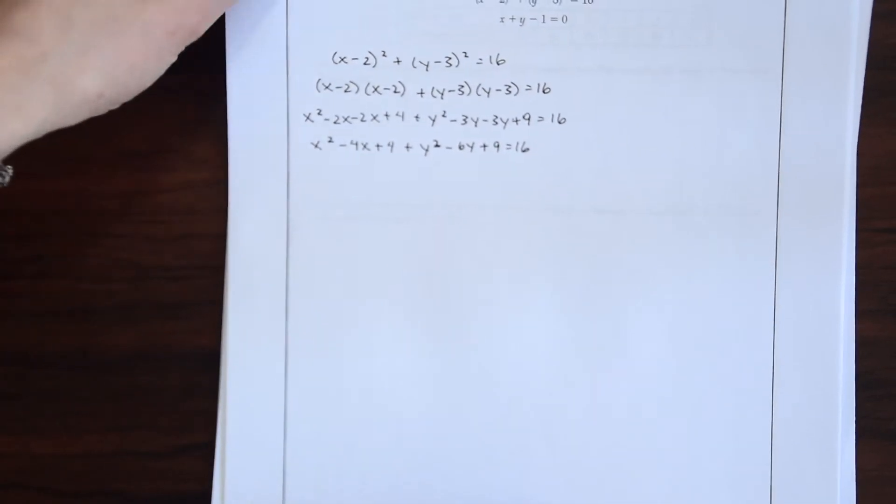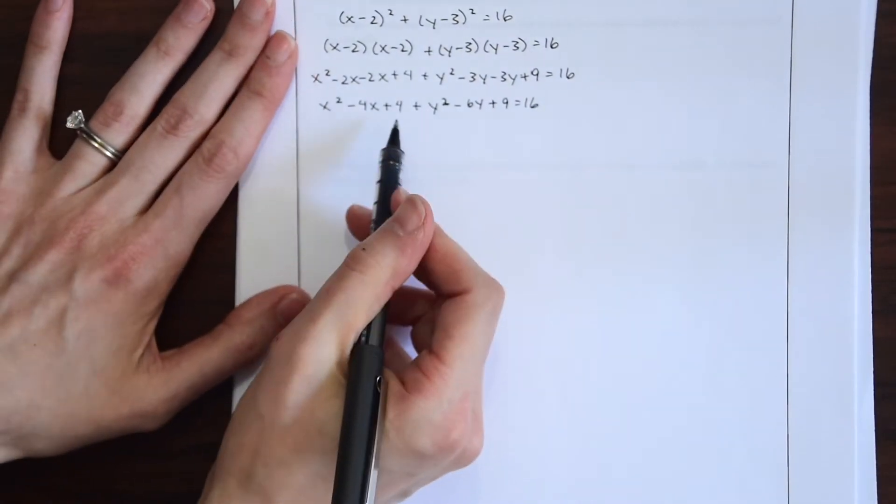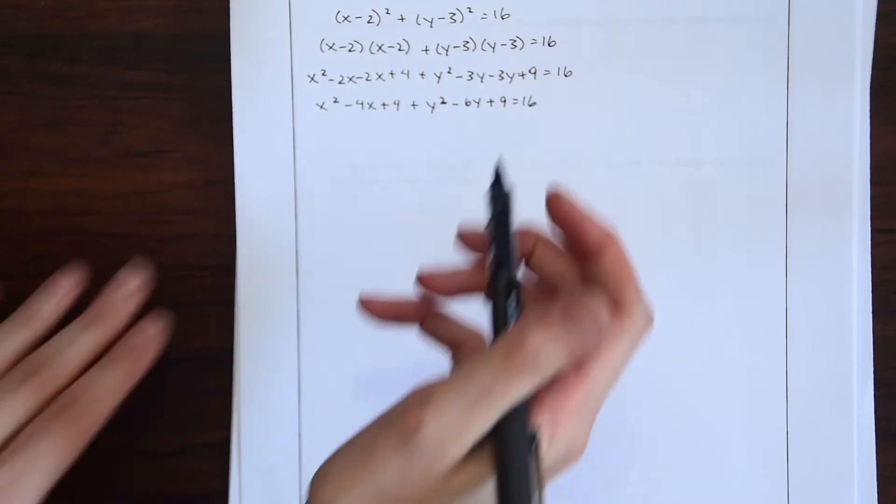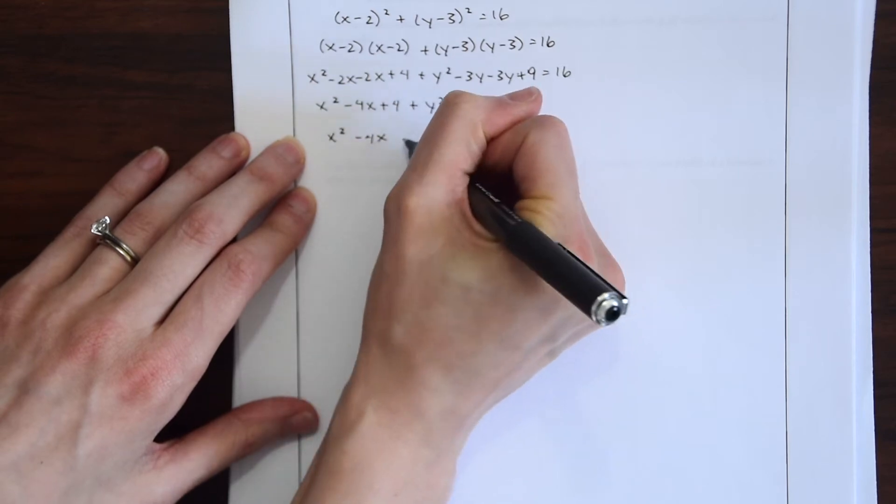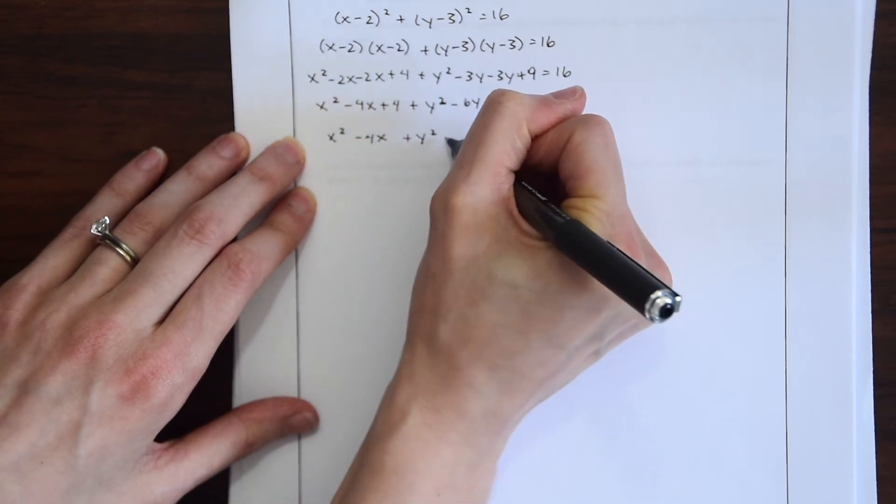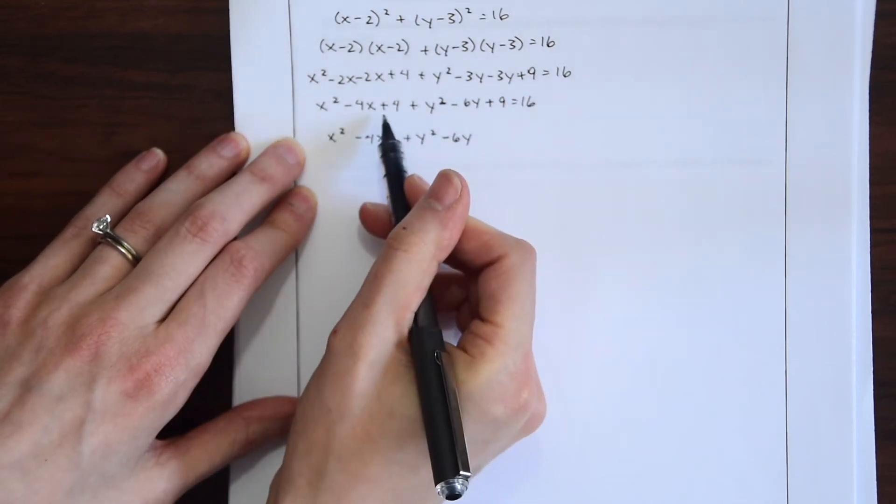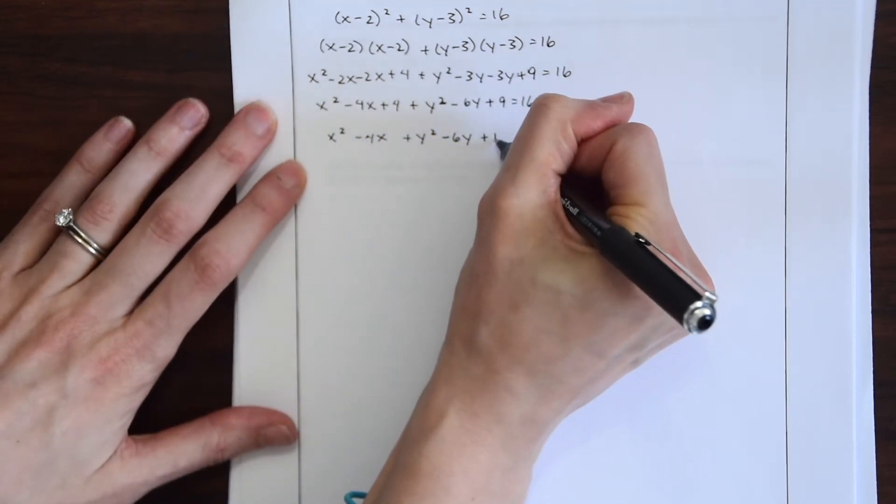x squared minus 4x plus 4 plus y squared minus 6y plus 9 equals 16. So we can combine this even further. We have these whole numbers 9 and 4. So we can combine those x squared minus 4x plus y squared minus 6y and then 4 plus 9 will just give us 13.